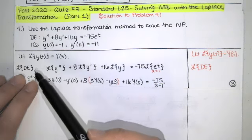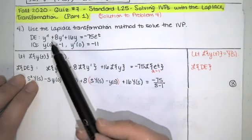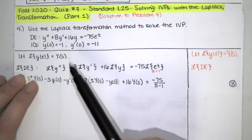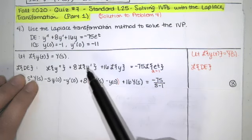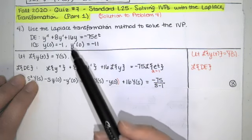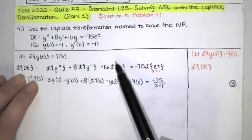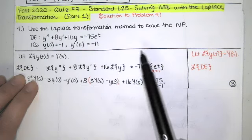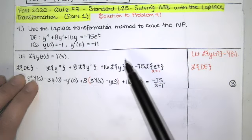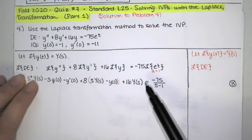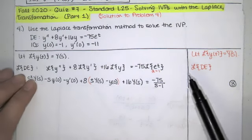Since the Laplace transform is a linear operator, we get the Laplace transform of y double prime plus eight times the Laplace transform of y prime plus 16 times the Laplace transform of y equals negative 75 times the Laplace transform of e to the at.